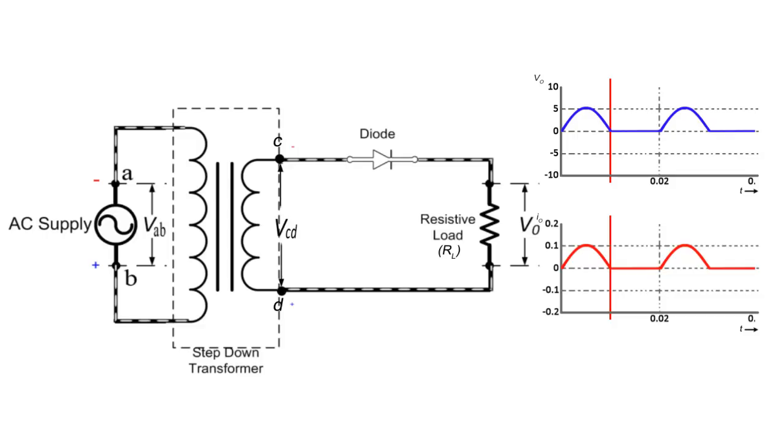During negative half cycle, the terminal C is negative and D becomes positive and the diode is reverse biased. Under this condition, the diode does not conduct and no current flows through the circuit. Therefore, during negative half cycle of the input, no voltage appears across the load resistor RL.